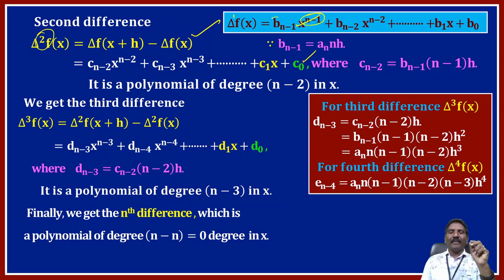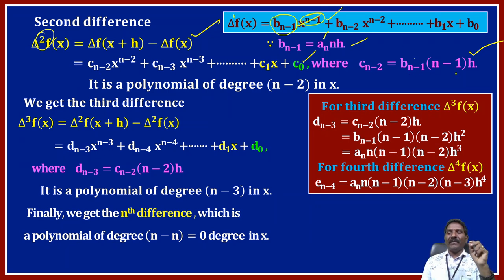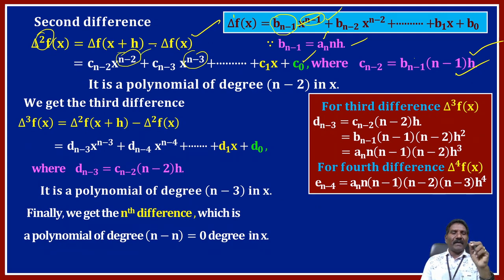The leading coefficient of the second difference is c_(n-2) equals b_(n-1) · (n-1) · h equals a_n · n · h · (n-1) · h equals a_n · n · (n-1) · h^2. The highest power is x^(n-2), so del squared f of x is a polynomial of degree n minus 2 in x, with powers decreasing from x^(n-2) downward.